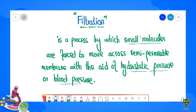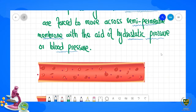Through semi-permeable membranes, molecules are forced and separated. The question here is: why are only small molecules separated? Small molecules have the ability to pass through the tiny pores present in blood capillaries and their membranes, while larger molecules cannot pass through because their size is too large.